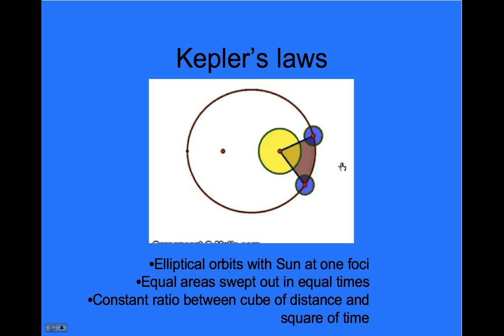And finally, that there was a ratio between the cube of the distance of the planet from the sun and the square of the amount of time for the orbital period.